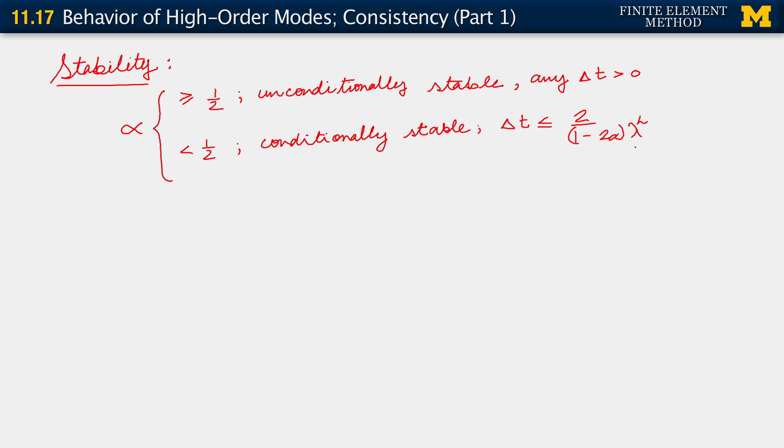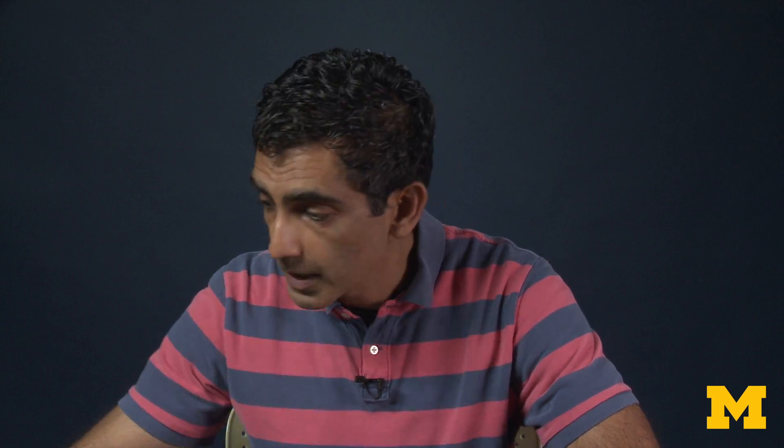Now, I want to say something more about this result. Observe that for lambda h, which is the discrete eigenvalue corresponding to the particular mode that we're looking at, lambda h can take on different values for different modes. So when we're looking at the full matrix vector problem, what we need to ensure is that this conditional stability is satisfied for all modes.